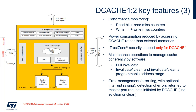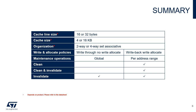An error flag and possibly an interrupt are raised whenever a bus error is returned to the master port of DCache — when the request is initiated by DCache itself, either a line eviction or a clean operation. When the master port forwards a request received on the slave port, DCache simply forwards the AHB response received on the master port back to the processor. This table summarizes the characteristics of the data cache depending on the product.